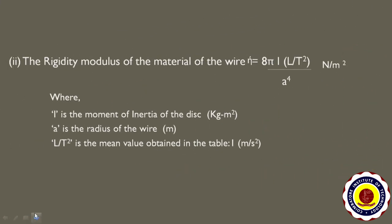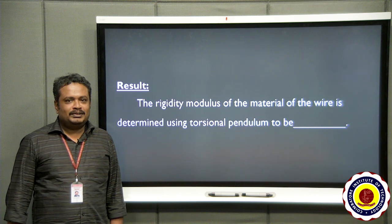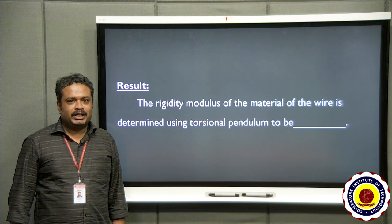The next formula is for finding the rigidity modulus of the material of the wire: η equals 8π times I times (L/T²) divided by A⁴, in Newton per meter square. Here I is the moment of inertia from the first formula, A is the radius of the wire from the screw gauge experiment, and L/T² is the mean value from tabular column 1. Substituting all these values gives the rigidity modulus. The rigidity modulus of the material of the given wire is thus found out by using the torsional pendulum experiment. Thank you.